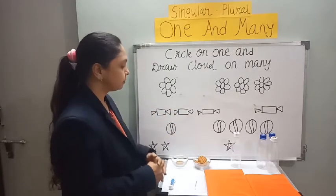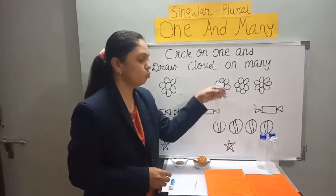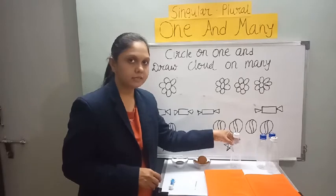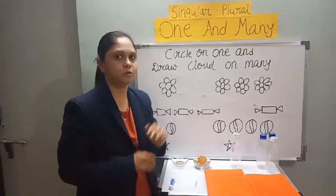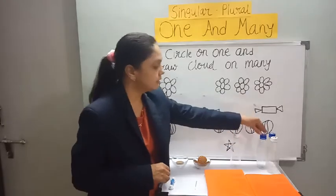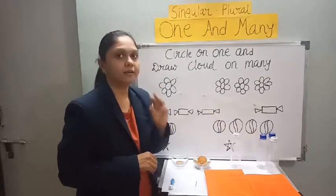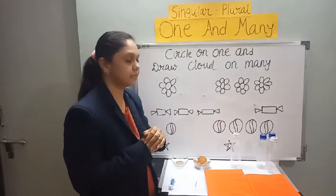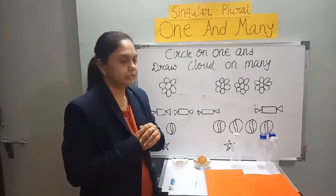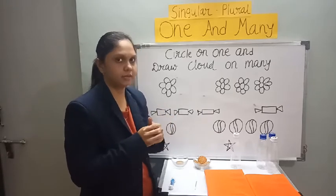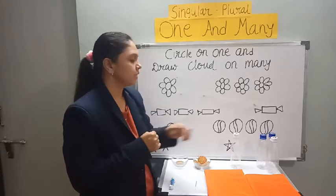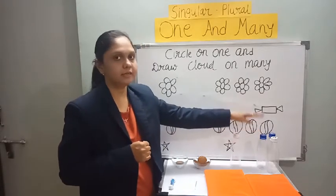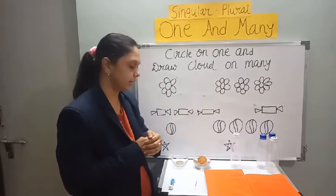Now here, this is one bottle — it is singular. And here are three bottles — that means it's plural, they are many bottles. One bottle here, and many bottles here.